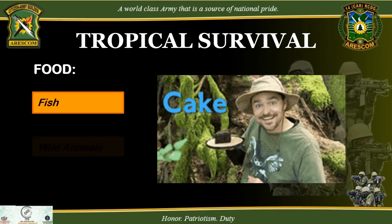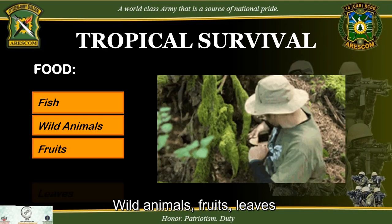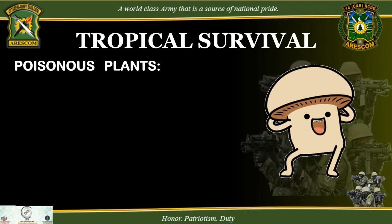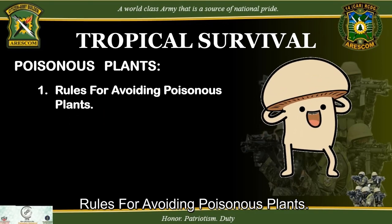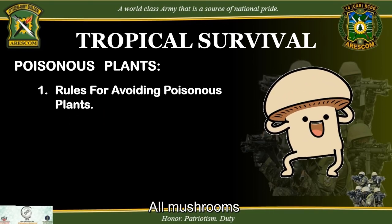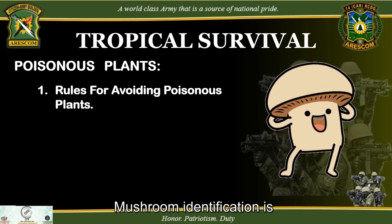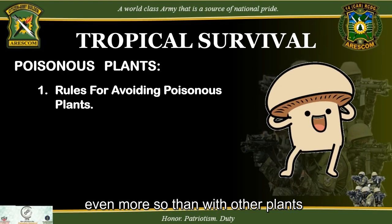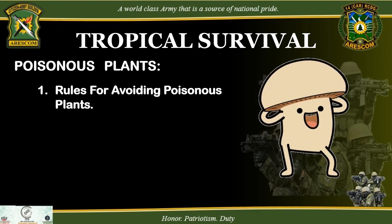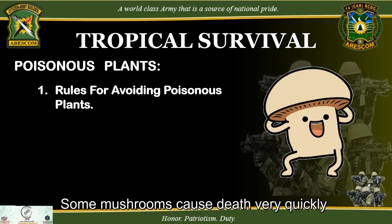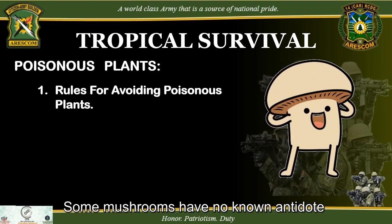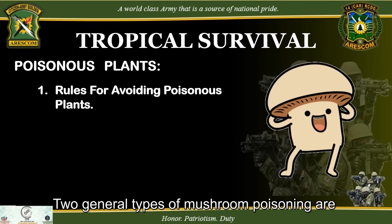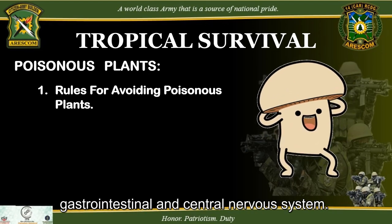Food sources include fish, wild animals, fruits, and leaves. Regarding poisonous plants — avoid all mushrooms. Mushroom identification is very difficult and must be precise, even more so than with other plants. Some mushrooms cause death very quickly and have no known antidote. Two general types of mushroom poisoning are gastrointestinal and central nervous system.